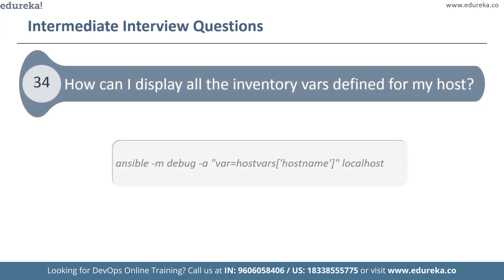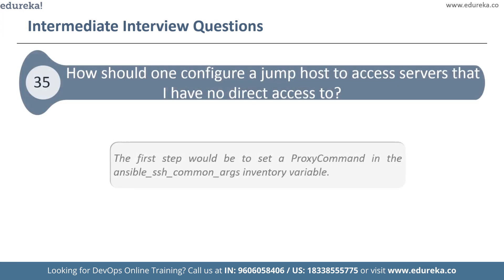The next question is: how can I display all the inventory variables defined for my host? In order to check the inventory variables resulting from what you have defined in the inventory, you can use the command shown on screen. This command will list down all the inventory variables for your host.